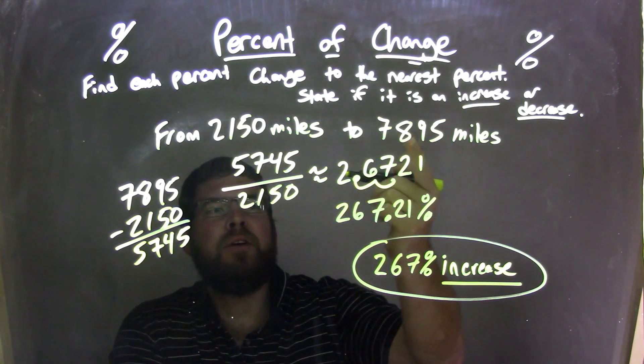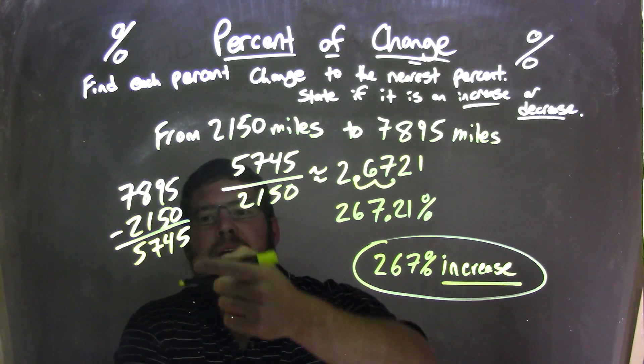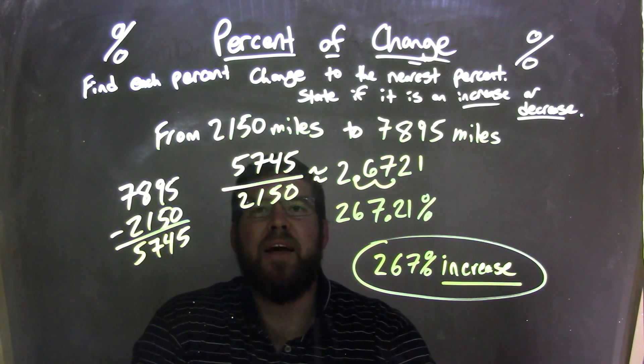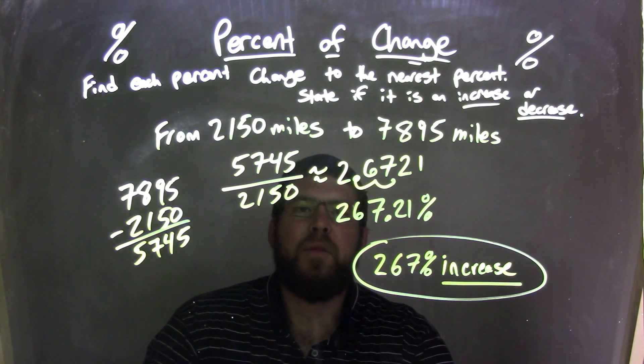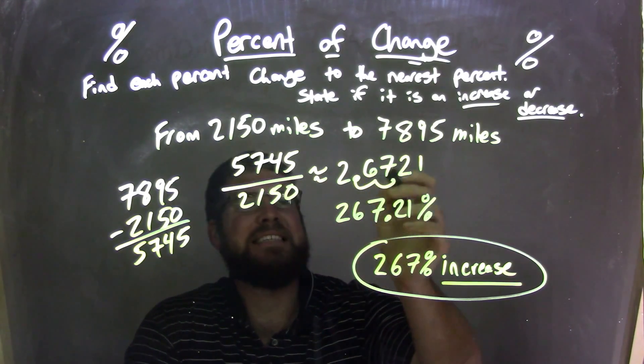So then I subtracted, the large number subtracted by the smaller number, to get 5,745. I then divided that number by our first number, 2,150, our starting point. And we're left with an approximate decimal of 2.6721.